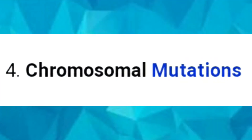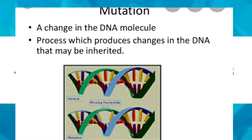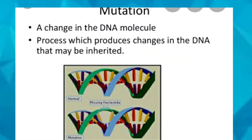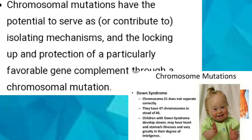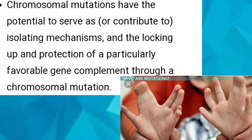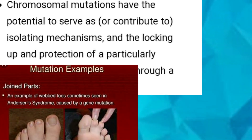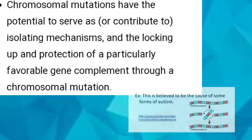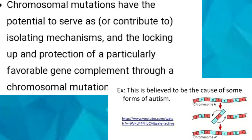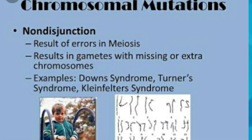The next factor is chromosomal mutation. Any sudden change in the DNA structure of an individual is called mutation. Chromosomal mutations have the potential to serve as an isolating mechanism, and the locking up and protection of a particularly favourable gene complement through a chromosomal mutation can contribute to speciation. These mutations, when preserved from one generation to another, might result in the formation of new species.